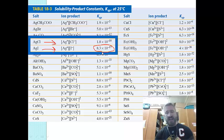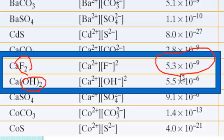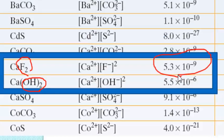Let's look at another substance that's not a one-to-one ratio: calcium fluoride and calcium hydroxide. Both dissolve to give one calcium ion and two other ions — calcium fluoride gives two fluoride ions, and calcium hydroxide gives two hydroxide ions — a one-to-two ratio. Since both dissolve in the same mole ratio, we can compare their KSP values directly. Calcium fluoride has the smaller KSP, so it is less soluble in water than calcium hydroxide.